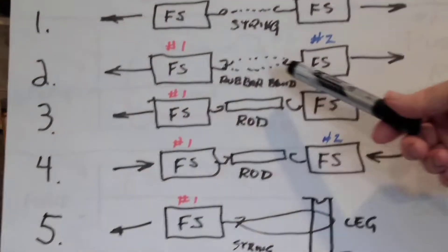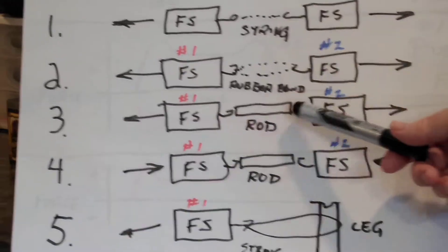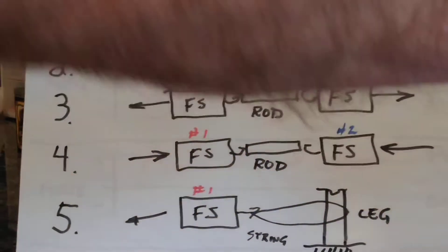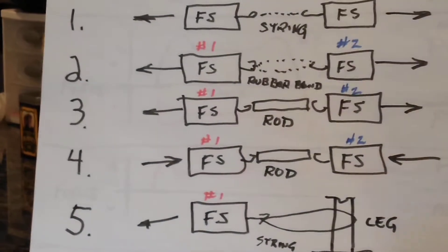In the third scenario we replace the rubber band with a stiff rod. Again, attaching the two force sensors, pulling them apart, seeing the reaction, seeing if it's the same as the string and the rubber band.